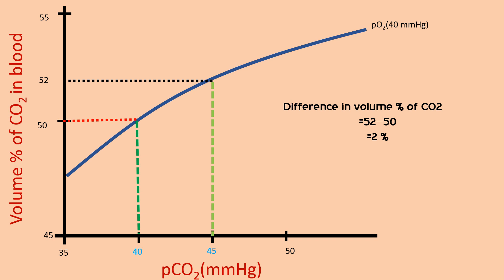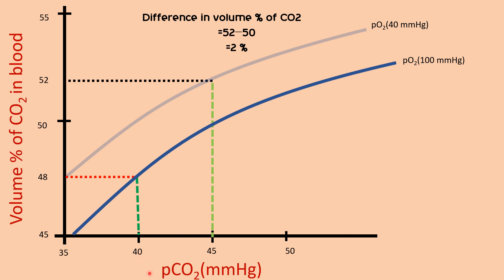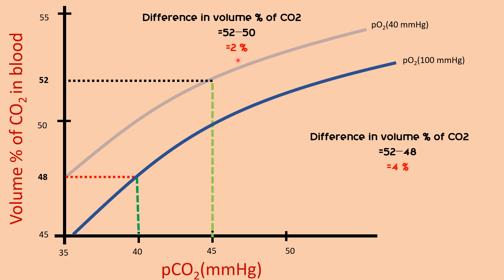Now we'll see the effect of the Haldane effect on this curve. You can see the curve has shifted — this shift is due to the Haldane effect. This second curve is drawn at a partial pressure of oxygen of 100 mmHg, which exists in the pulmonary capillary. At a partial pressure of carbon dioxide of 40 mmHg, the corresponding volume percentage of carbon dioxide in the blood is now 48%.